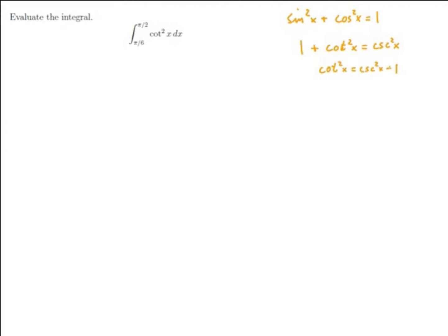Now let's use that identity to rewrite our integrand. This is the integral from pi over 6 to pi over 2 of cosecant squared of x minus 1, with respect to x.